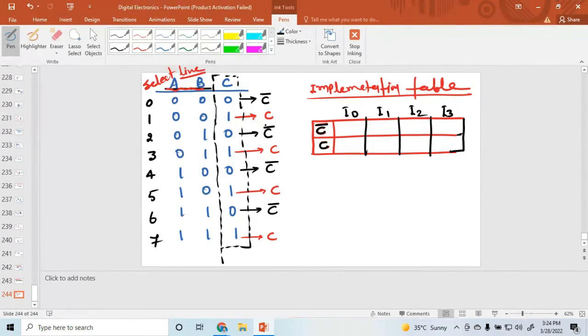This one is c bar and another one is c. And the values are, first I0. I am writing I1, I2, and I3. So where is the c bar? In the place of 0, 2, 4, and 6. So here 0, 2, 4, and 6.